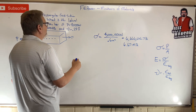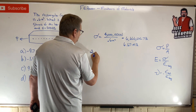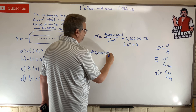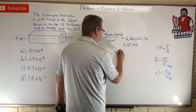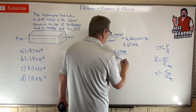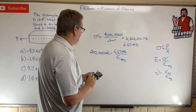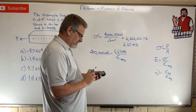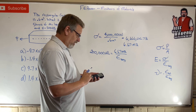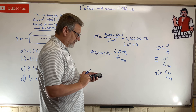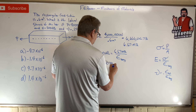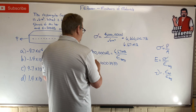E is 200 gigapascals. I have megapascals over here, so I'll convert: 200 GPa equals 200,000 MPa. E equals stress over strain longitudinal, so strain longitudinal equals 6.67 divided by 200,000, which equals approximately 3.333×10⁻⁵. That is strain longitudinal.